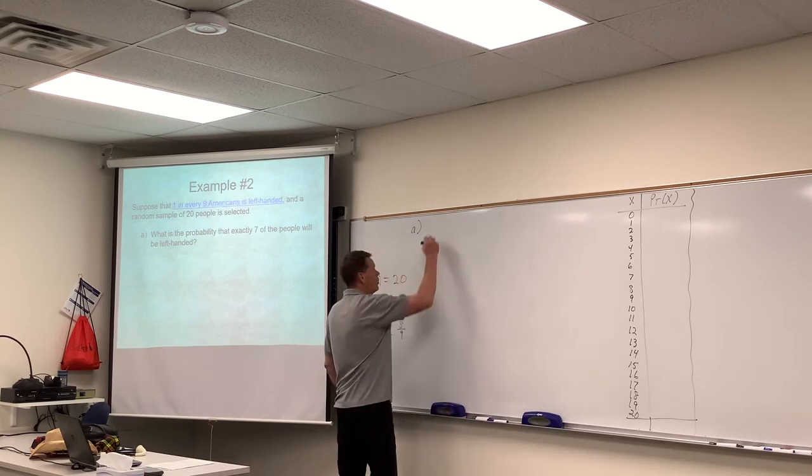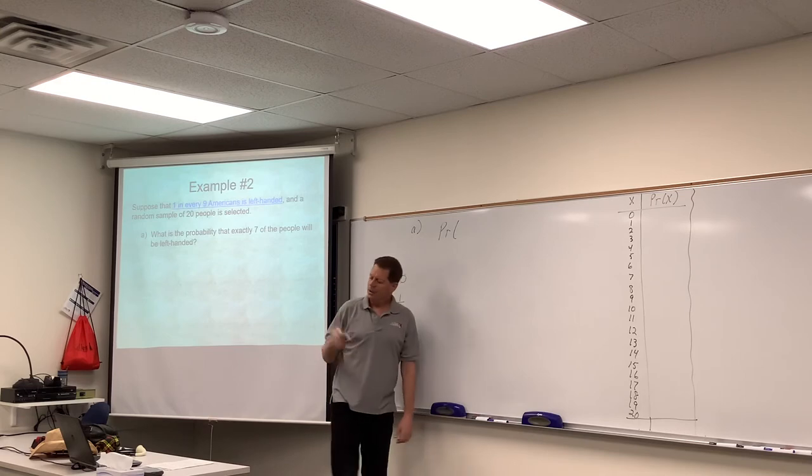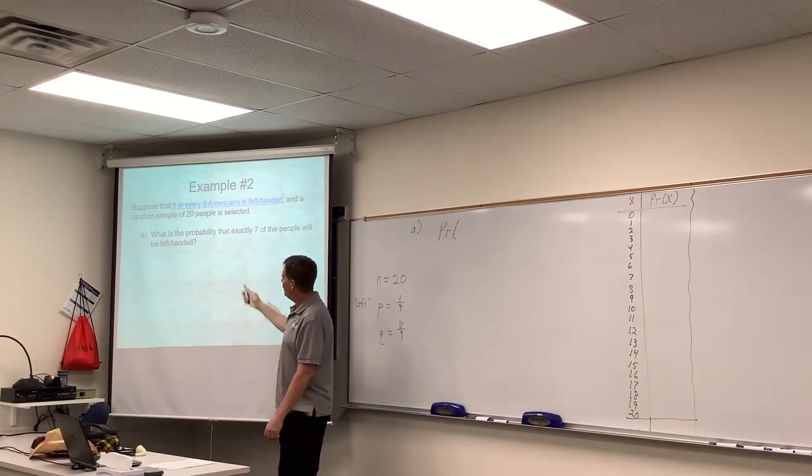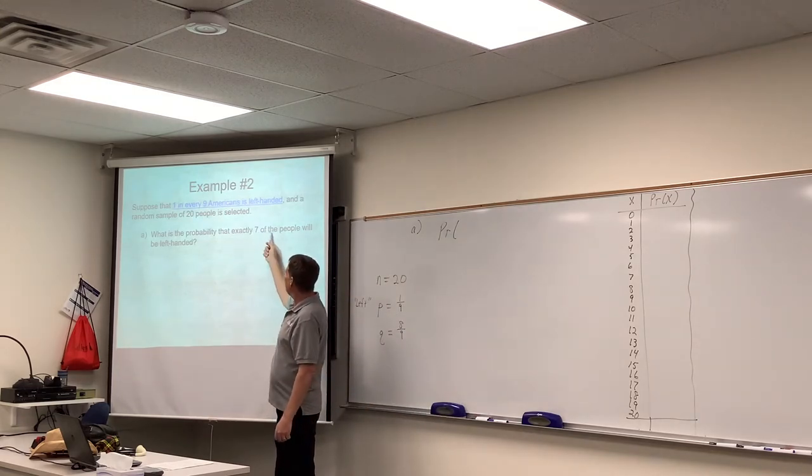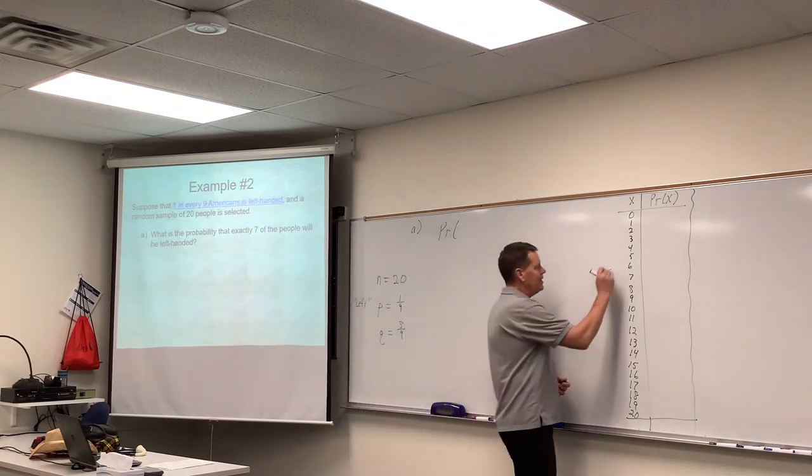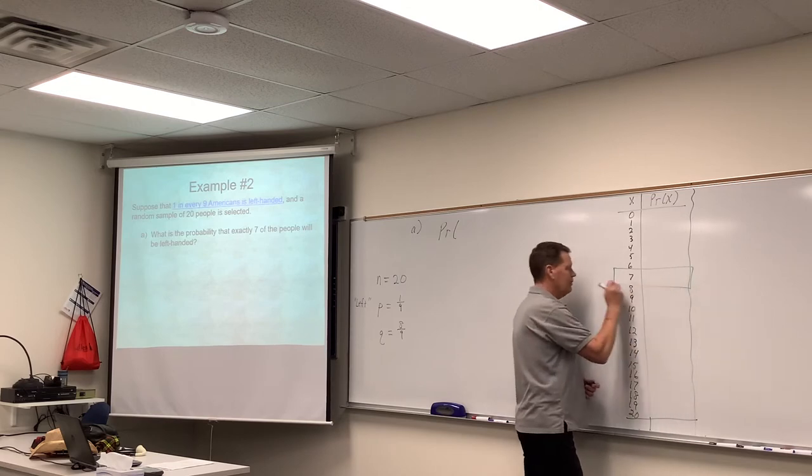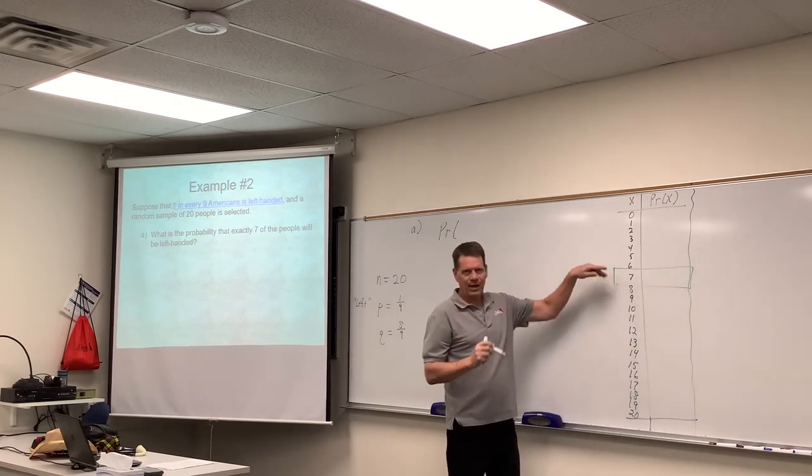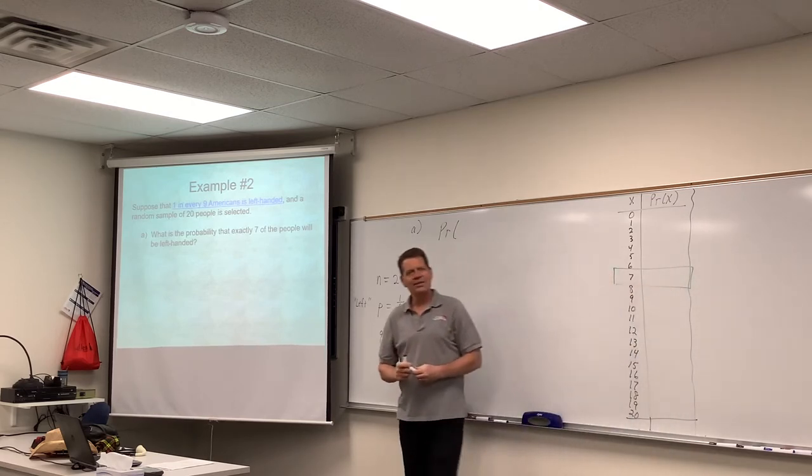And then it's a matter, when we set up these questions, as to which of those numbers are we looking at. It says, what's the probability that exactly seven of those people will be left-handed? Well, in my book, exactly seven would be that right there. Seven. I boxed in seven if you can't see it really well.